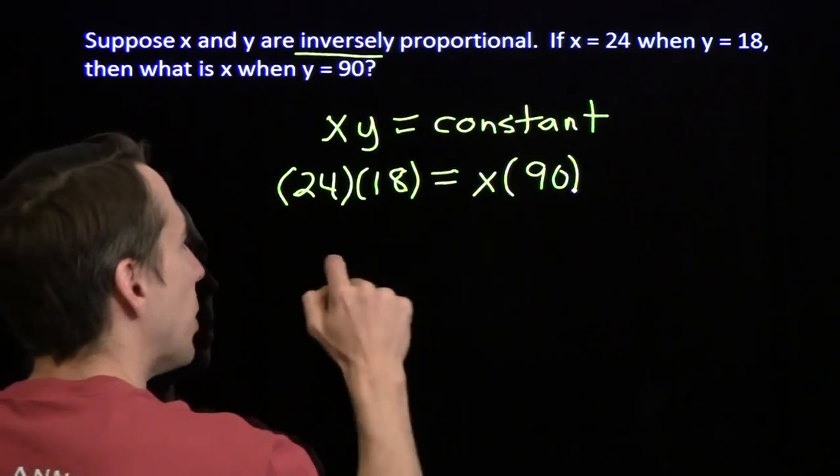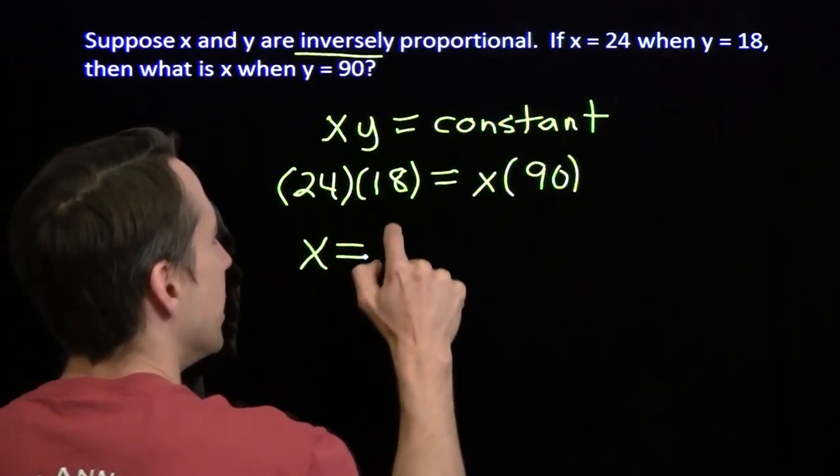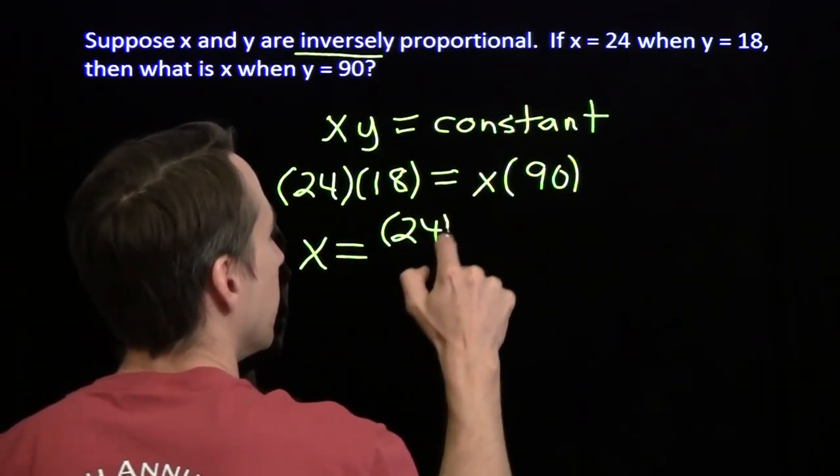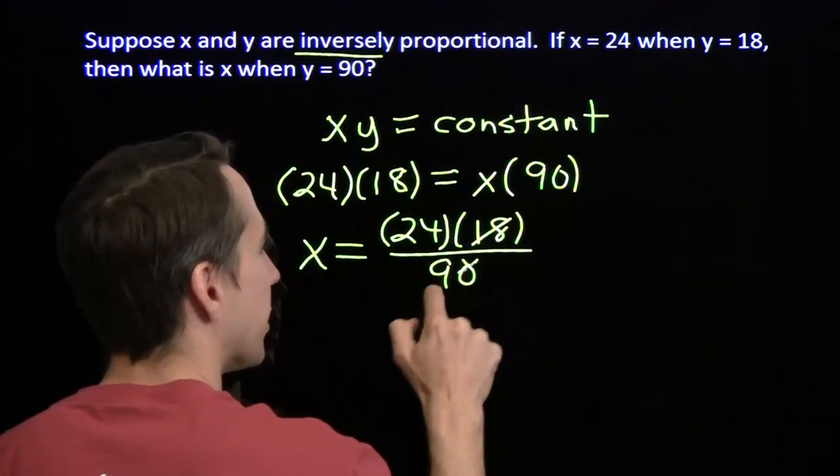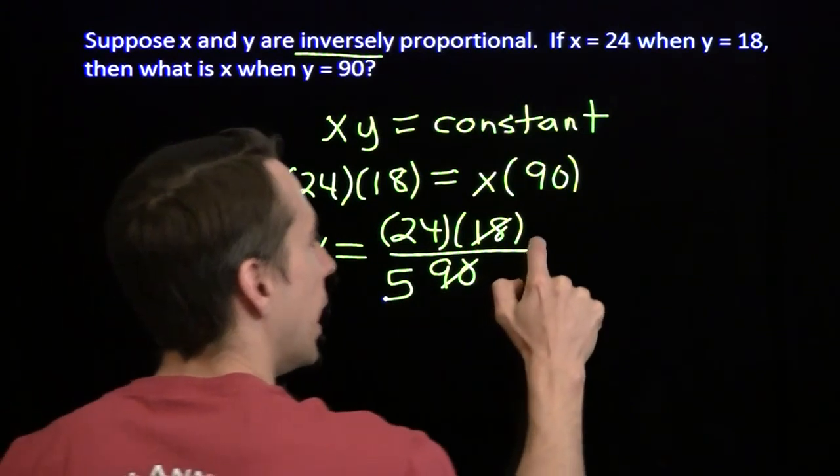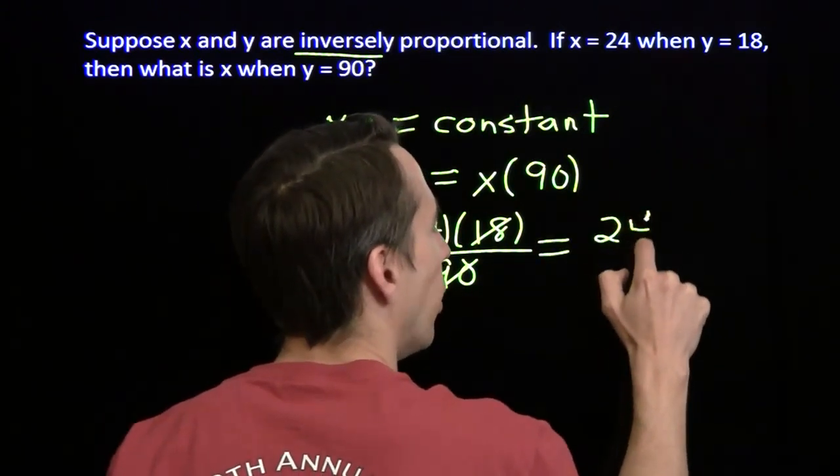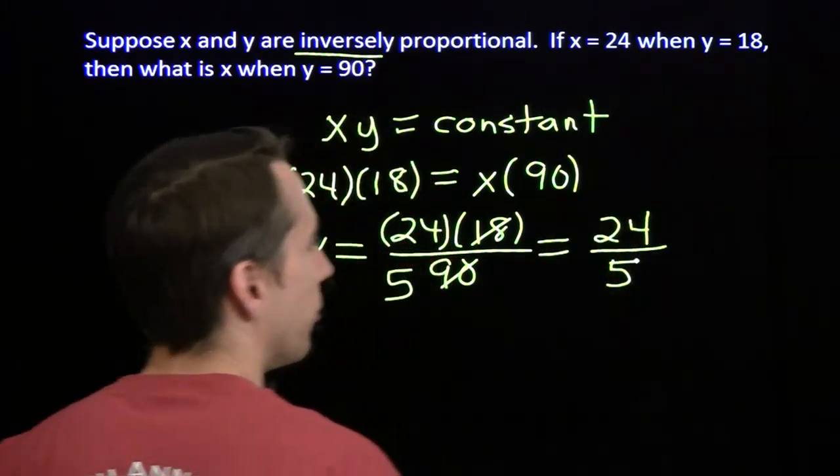We can solve for x by dividing both sides by 90. We get 24 times 18 over 90. Take out a factor of 18, and we get x is 24 over 5.